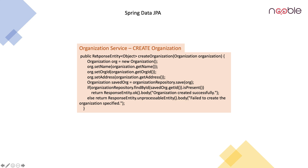Now let us talk about the service class. In the OrganizationService we are defining a method called createOrganization which takes in an argument of type Organization. What we are doing here is creating a new organization, setting the name with org.setName and organization.getName, the same for the orgId and the address. Here we are not saving the address separately but we are using CascadeType.ALL so we don't have to save it separately. We are saving the new organization and checking if the saved org is present. If it is present, we return a message: organization created successfully. Else, we return fail to create the organization specified.